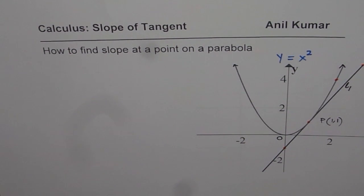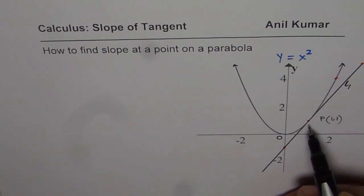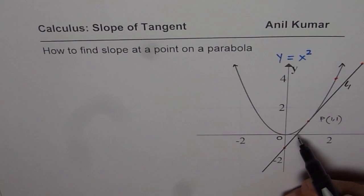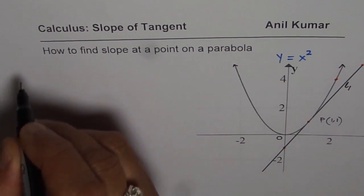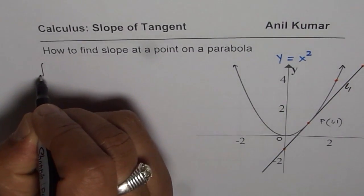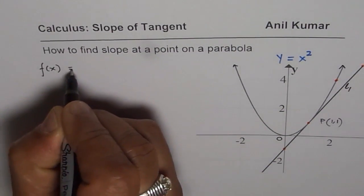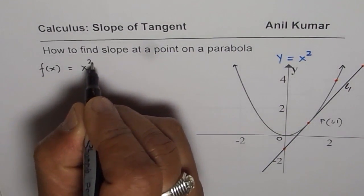It is very difficult to find slope of a tangent line with just one point. If we have two points, then we can use difference of quotient and find it. Now here the strategy is to understand that we are given a function, we could write this as f(x) equals to x square.